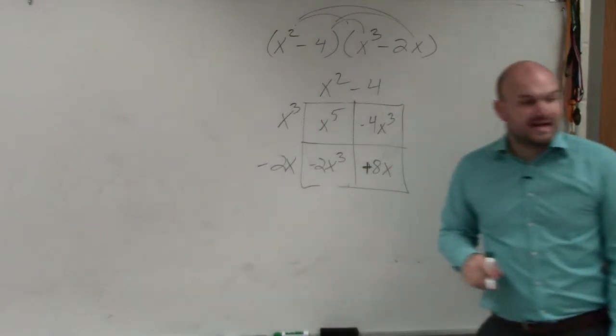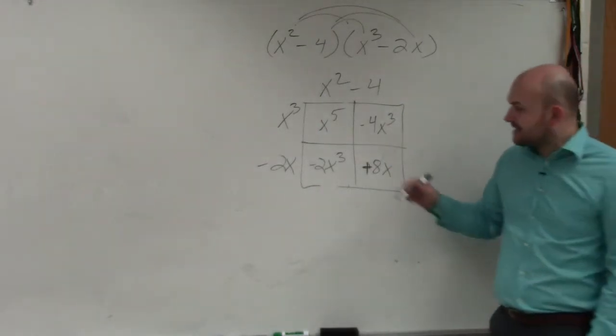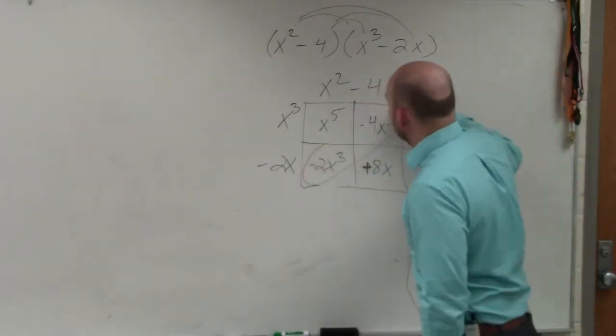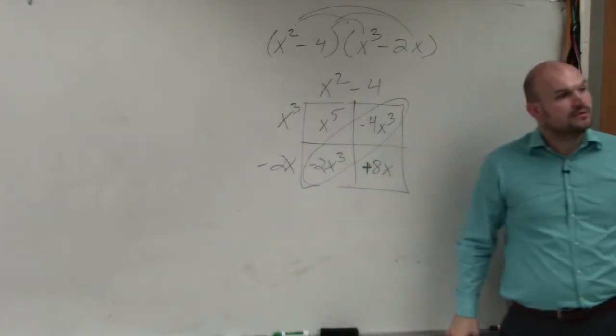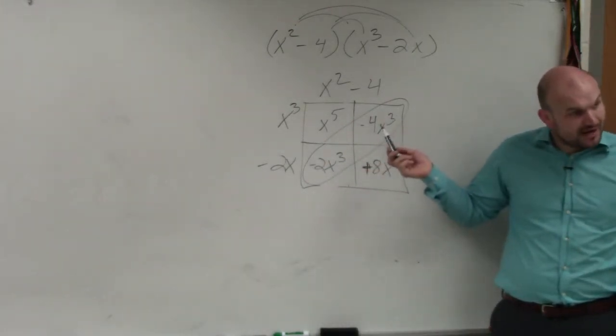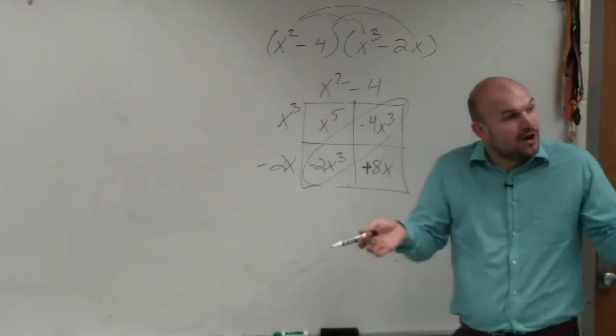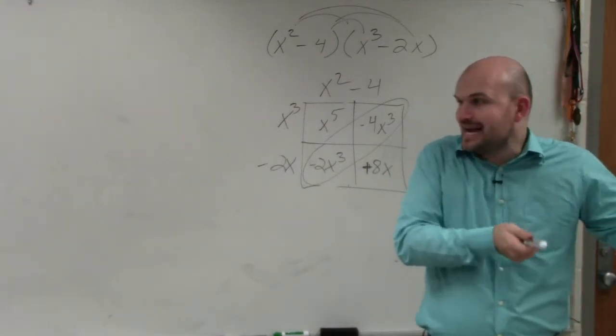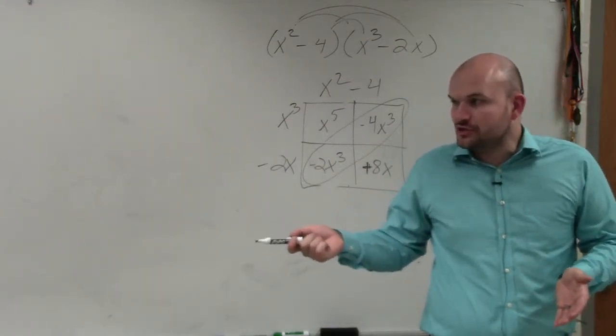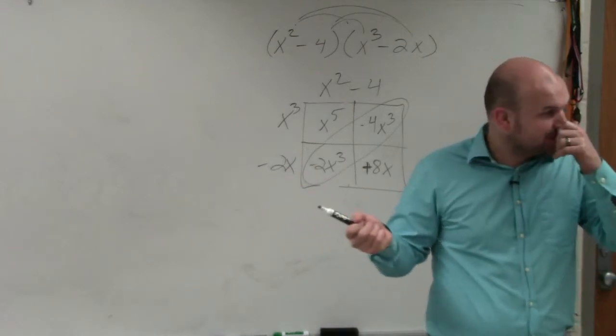So now the next important thing that we need to look at is that my middle terms—you can see these are both x cubes, right? So x cubes I can add. I can't add an x squared and an x to x cubed, but I can add x cubed and x cubed.